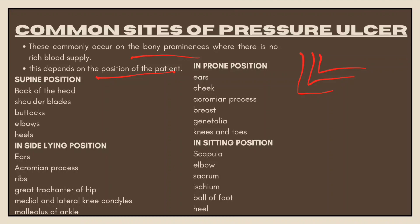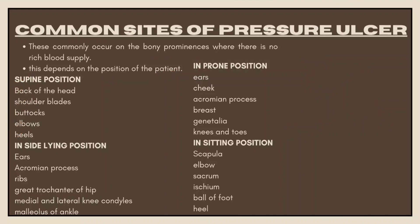For example, when a patient is in the supine position, pressure ulcers can occur at the back of the head, shoulder blades, buttocks, elbows, and heels.